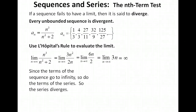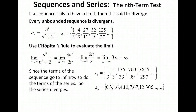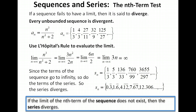We did all that without even looking at the series — we're just using the sequence to get information about the series. But let's look at the partial sums anyway. Adding the terms gives us 1/3, then 5/3, then 136/33, and so on. In decimal form: about 0.3, 1.67, 4.12, 12.306 — those numbers are clearly continuing to grow. So if the limit of the nth term of the sequence does not exist, the series diverges.